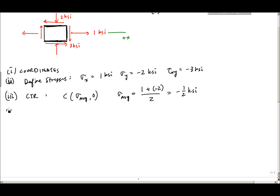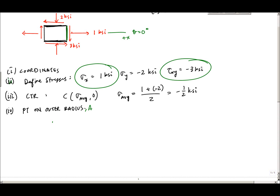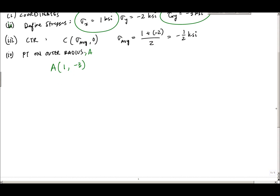Next you need a point on the outer radius. That point represents the x face, or theta equals 0 degrees. We'll call it Point A, and it's simply the coordinates sigma x comma tau xy. So Point A is at 1 comma minus 3. Now we're ready to draw those points on a coordinate system.